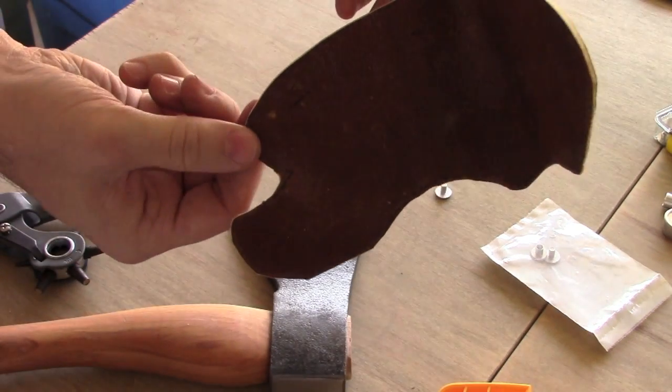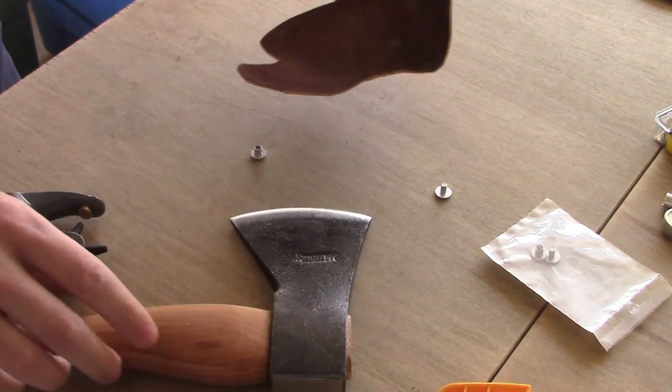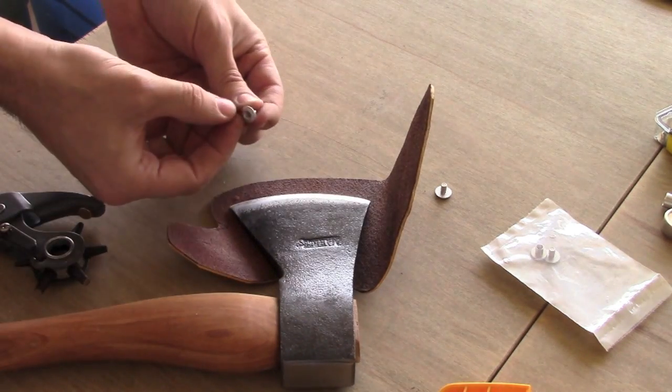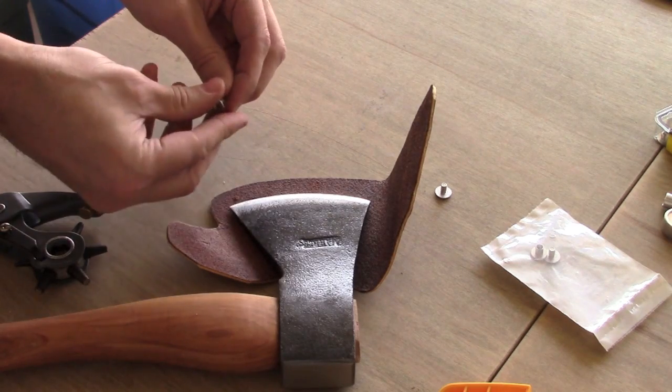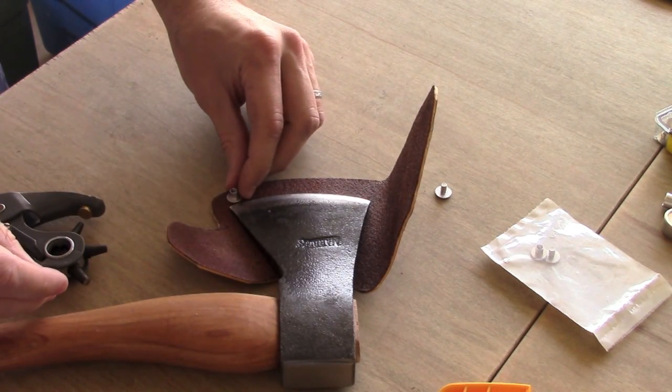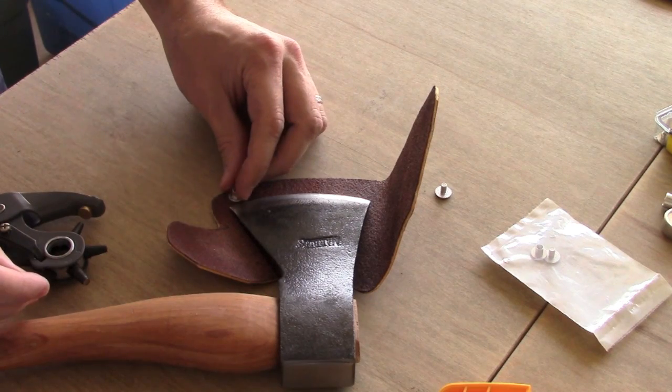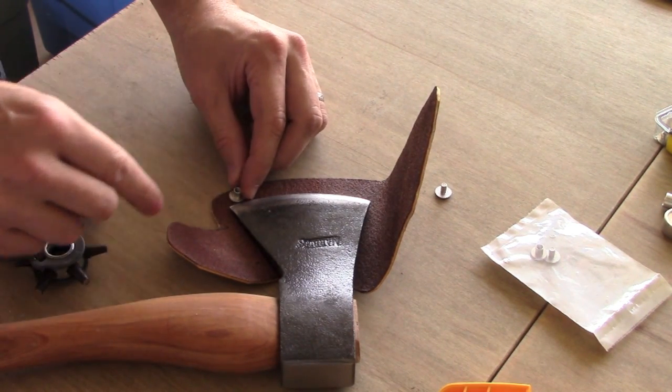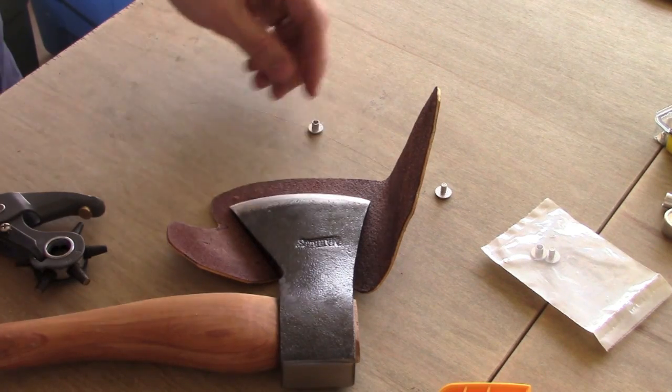I don't know if you can see that, but it marked it quite nicely. You want the edge of your Chicago screw to be not right on the edge, maybe an eighth of an inch in. Give it some room to sand. I think that's a great spot right there.